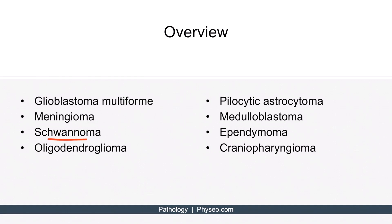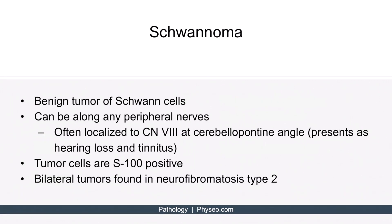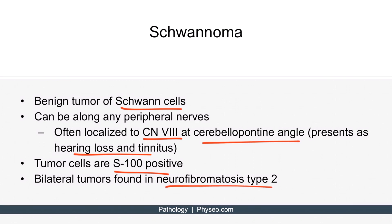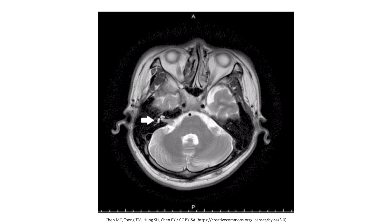Now let's discuss schwannoma. As the name implies, this is a benign tumor of Schwann cells. Although this can be along any peripheral nerve, it's often localized to cranial nerve 8 at the cerebellopontine angle. When this cranial nerve is involved, patients can present with hearing loss and tinnitus. The tumor cells are S100 positive, and bilateral schwannoma tumors can be found in someone with neurofibromatosis type 2. Here's an MRI image of someone with a schwannoma — notice the mass is at the cerebellopontine angle, where the cerebellum and the pons meet.